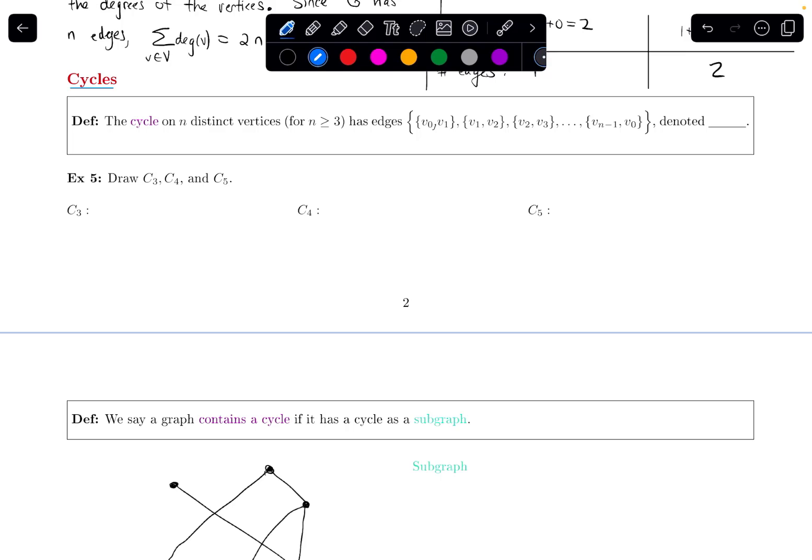The way I denote a cycle is I write capital C, and then I write n, where n is the number of vertices. So let's do an example. Let's draw C3, C4, and C5.